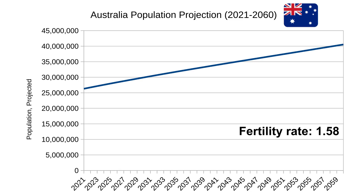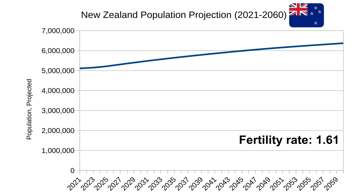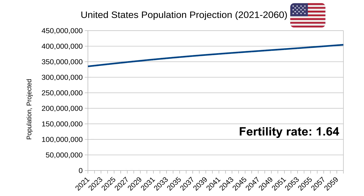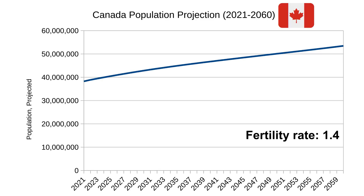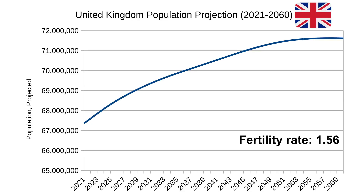Most of these Western nations rely on immigration to fuel their populations. New Zealand is also projected to increase in population over the next few decades. Similarly, the United States population is headed upwards thanks to immigration, as is Canada's, which has a fairly low fertility rate at 1.4. I can only assume that immigration plays a large part in Canada's increasing population. The UK is following similar trends, although it is expected to peak around the mid to late 2050s.